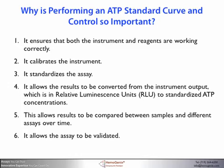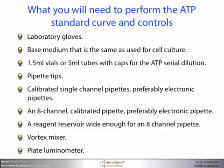Before we get started, let's summarize what you'll need to perform this part of the assay. Laboratory gloves are important because ATP is present on the skin, so it's very important that you wear gloves for all of these procedures. You'll need a base medium the same as that used for cell culture, 1.5 milliliter vials or 5 milliliter tubes with caps for the ATP serial dilution, calibrated single channel pipettes (preferably electronic), an eight channel calibrated pipette (again preferably electronic), a reagent reservoir wide enough for an eight channel pipette, a vortex mixer, and of course the luminometer.